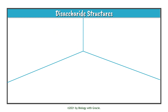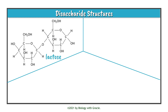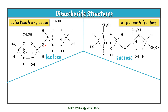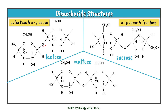Now let's go over the disaccharide structures. Lactose is made up of galactose and alpha glucose, joined by a glycosidic bond. Sucrose is made up of alpha glucose and fructose. Maltose is made up of alpha glucose and another alpha glucose molecule. Make sure you remember which monosaccharides make up each disaccharide — there's more detail on how disaccharides are formed via condensation reactions and broken apart via hydrolysis in my first carbohydrates video.